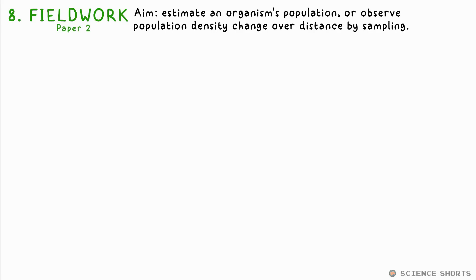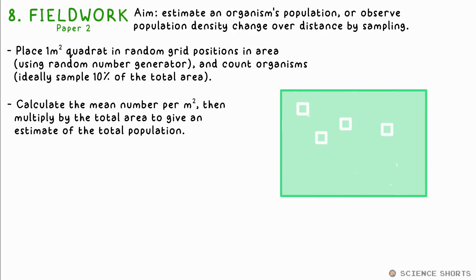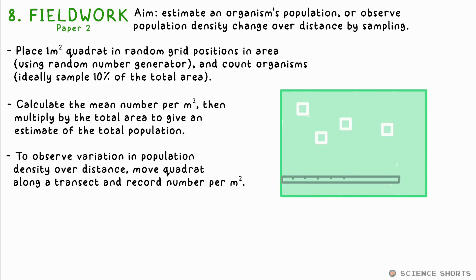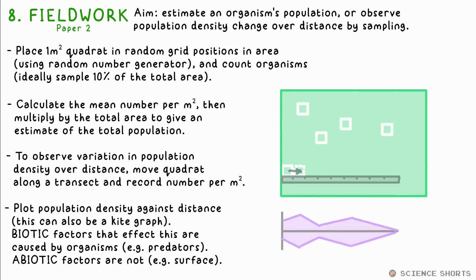Biology 8: fieldwork and using quadrats. We can use a quadrat to help us estimate the population of an organism in an area. Use a random number generator to choose grid positions in your area to place the 1m² quadrat over and count the number of the chosen organism inside each. You should aim to sample 10% of the total area to give an accurate estimate. Calculate the mean number per metre squared, then multiply this by the total area in metres squared to give an estimate for the total population. You can also combine the quadrat with a transect — a line — to see how population density varies with distance in a certain direction, say along a beach, moving the quadrat up the transect one metre at a time. You can plot population density against distance — this could also be a kite graph. Don't forget: factors affecting population density caused by other living things are biotic factors (e.g. predators); if it's a non-biological factor, say the surface the organism is on, this is an abiotic factor.